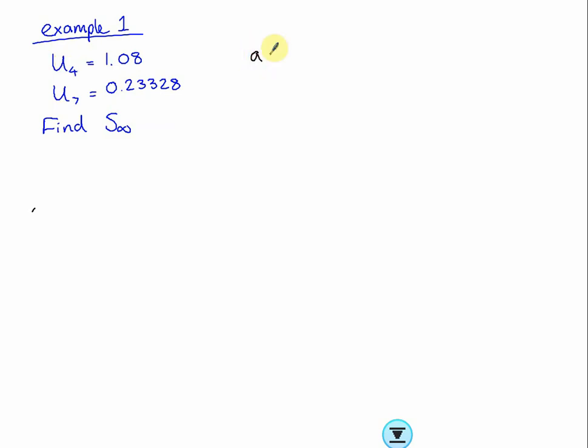And that is equal to 1.08. And the seventh term is the first term multiplied by the common ratio six times, and I get 0.23328. So I'm just writing down what I know. Sum of infinity, well to do that I need a and I need r. I don't have either, so we'll just add to this in a little while.